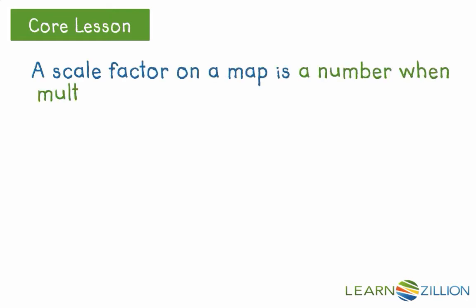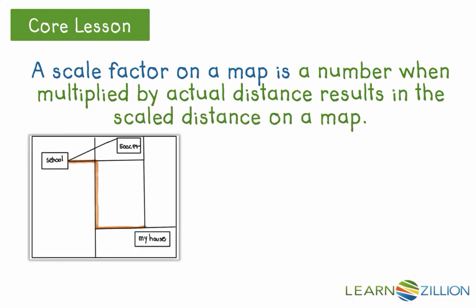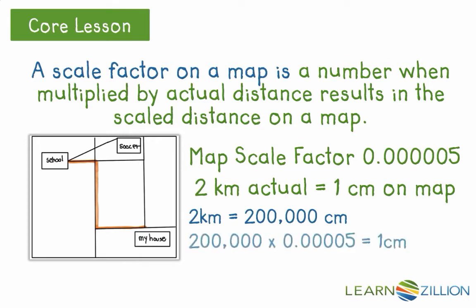A scale factor on a map is a number when multiplied by actual distance results in scale distance on a map. This map has a scale factor of 500 thousandths. If the actual distance from point A to point B following the road is 2 kilometers, to convert it to map distance of centimeters we first have to convert 2 kilometers to centimeters, which equals 200,000 centimeters. 200,000 centimeters times the scale factor of 500 thousandths equals 1 centimeter. The scale on the map will be 1 centimeter equals 2 kilometers. This means that every 2 kilometers in actual distance is represented by 1 centimeter on the map which represents the actual distance.